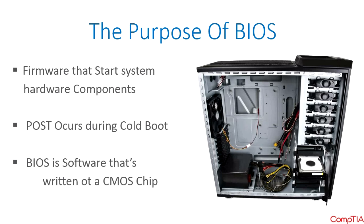Firmware is sort of a midpoint between hardware — which is stuff you can touch, like the hard drive and power supply in the picture — and software, which is code that runs and performs some function. Software you can install easily on your computer or smartphone, whereas firmware is included with the hardware and is more permanent.